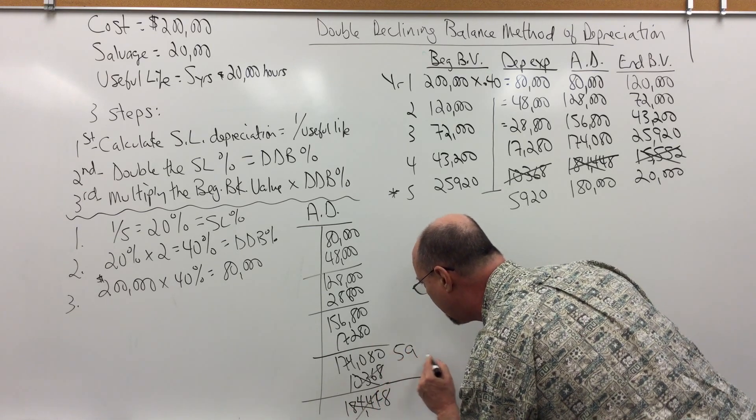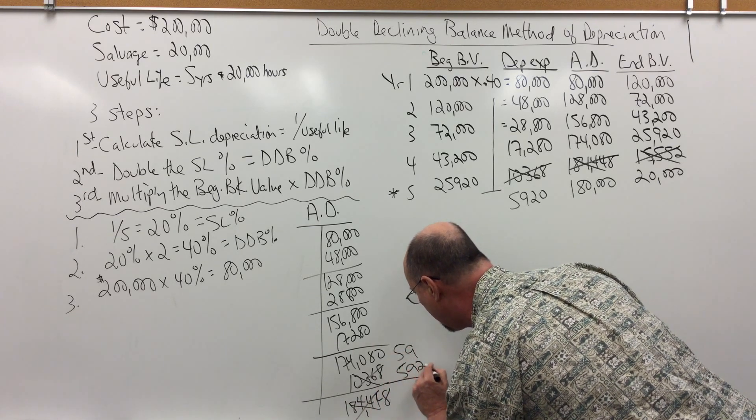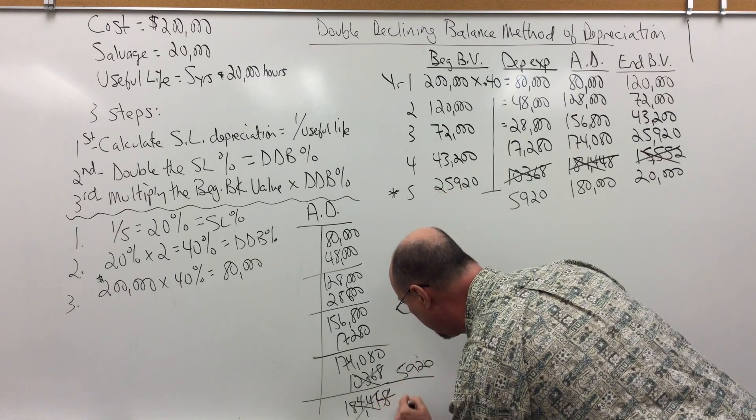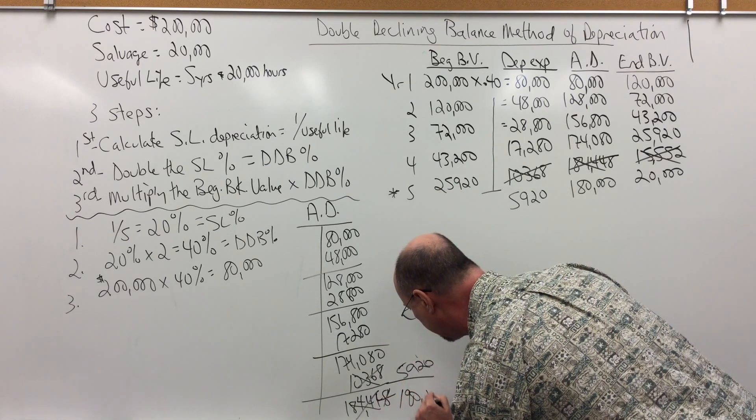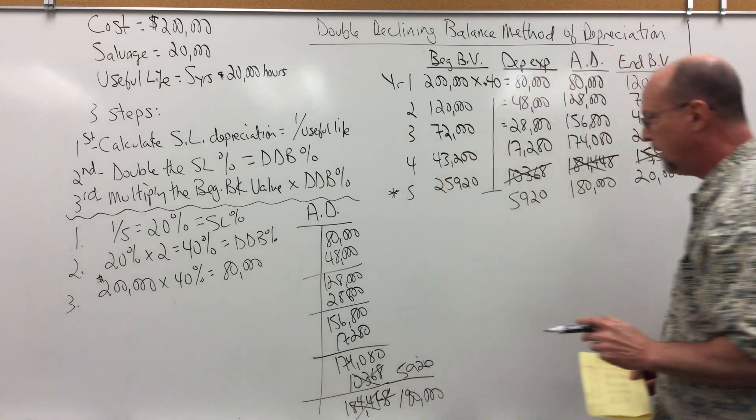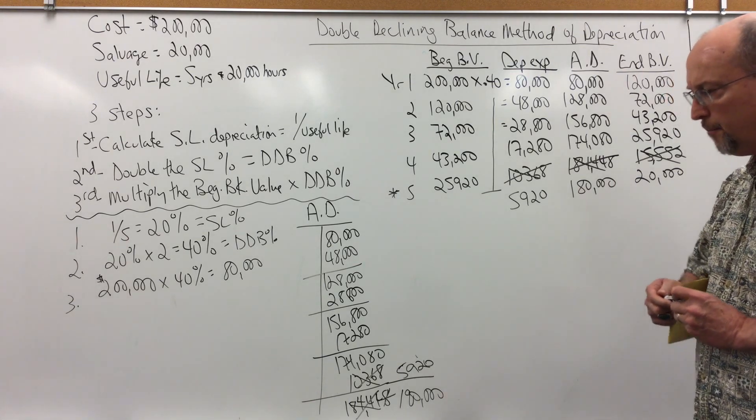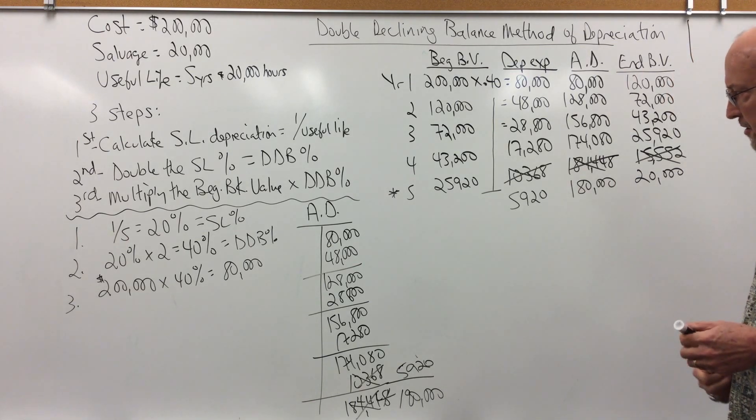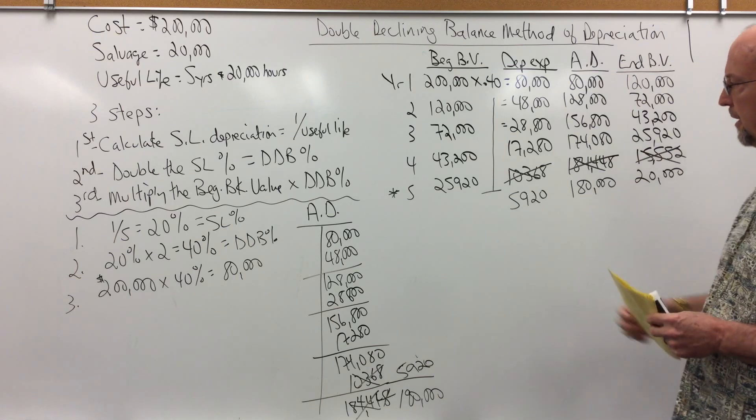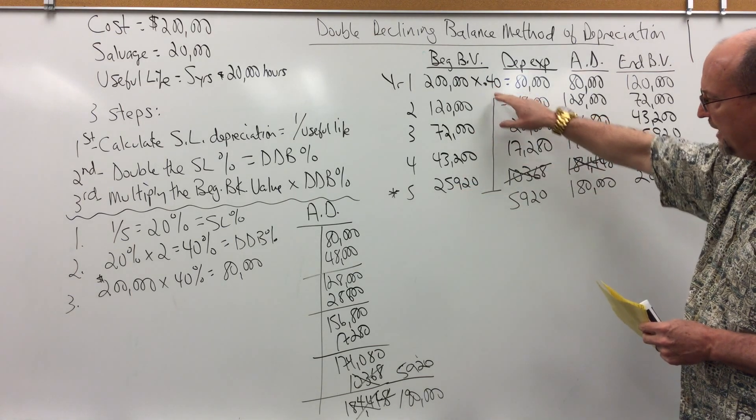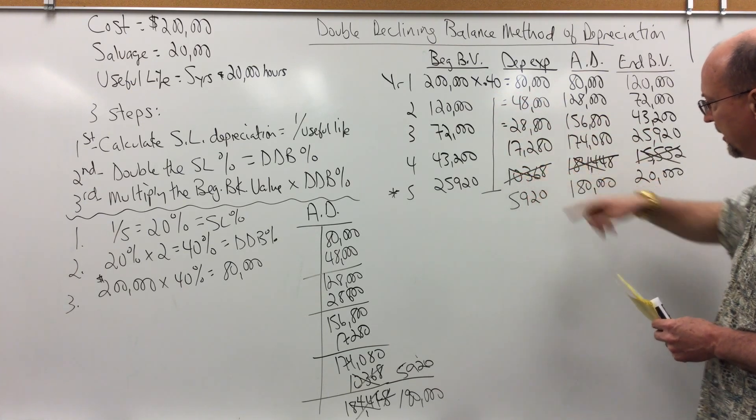So, 5,920 would get us to $180,000. Okay, so with this method, you have to be mindful that you cannot depreciate below the salvage value, which means, even though when we multiply the beginning book value by the declining balance percentage, we may not be able to take that full amount of depreciation.